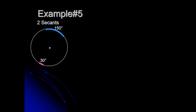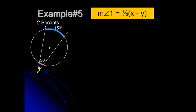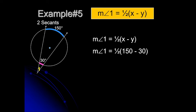For Example 5, two secants intersect outside the circle. The intercepted arcs are 30 degrees and 150 degrees respectively. Applying Theorem 2, the measure of angle 1 is one-half the difference: ½(150 − 30) = ½(120) = 60 degrees.